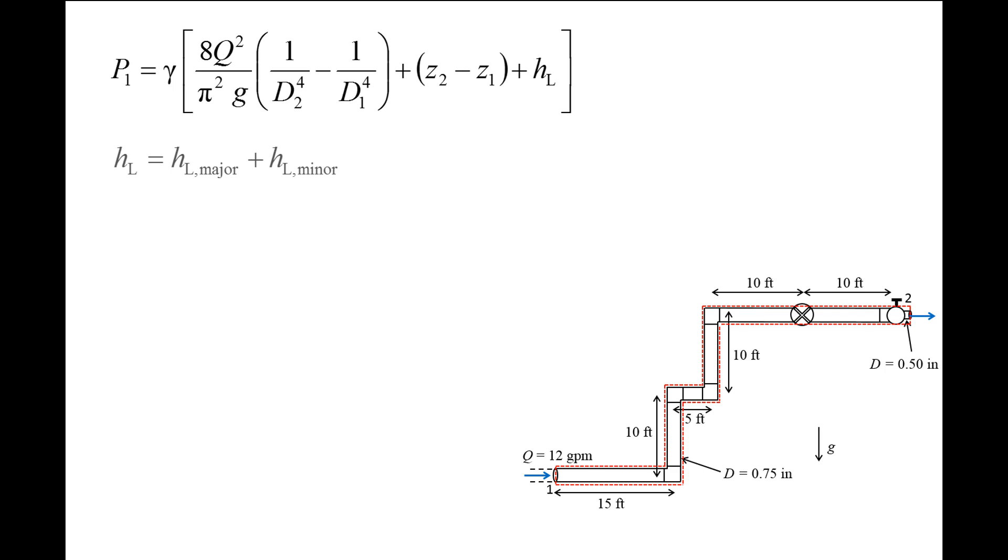The head loss is equal to the major loss plus the minor loss. The major loss equation is the friction factor f times the total length of pipe L over the pipe diameter D times the average flow speed through the pipe squared over 2g. We can find the total length of pipe by adding the length of the six individual sections of pipe, giving us 60 feet.